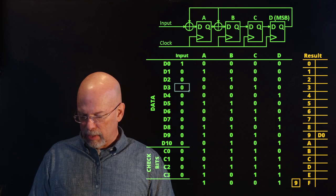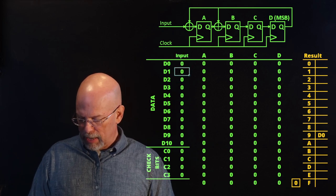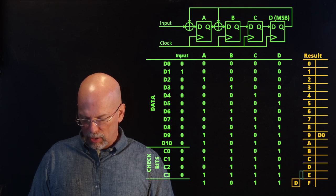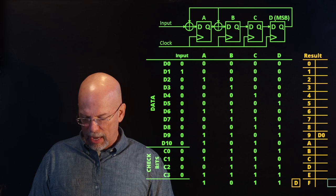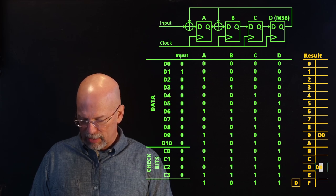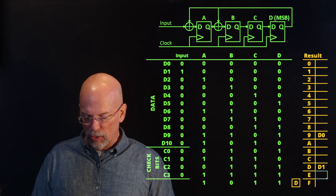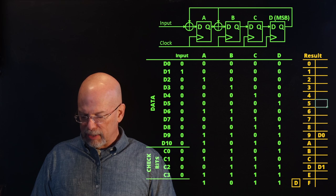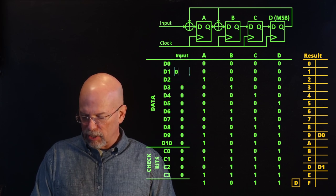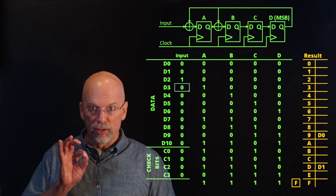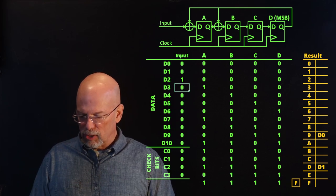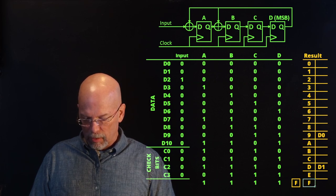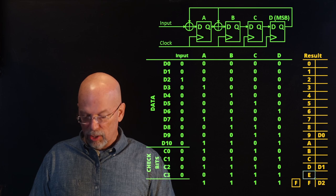Now if we come back here and change D0 back to a zero and put D1 as a one, that shows us, notice down here, that our error is now D. So that's D1. So whenever we see a D as our result, we know that we've got bit D1 flipped. And I'm going to do this one at a time for each one of these bits. And you're going to see that there's going to be a unique character or a unique hexadecimal value for each one of these bits as I fill out this table. So D2 flips, that's an F and so on. Be back in a second.